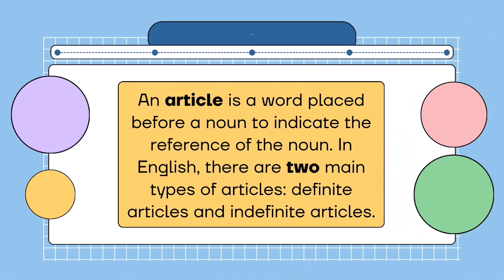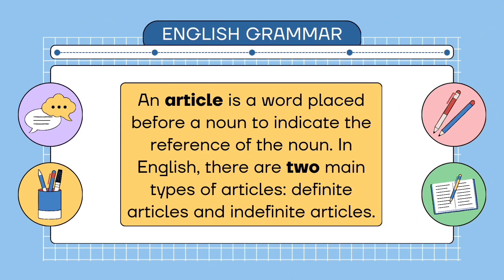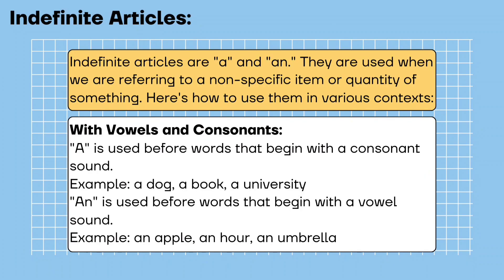Article. An article is a word placed before a noun to indicate the reference of the noun. In English, there are two main types of articles: definite articles and indefinite articles. Here's how to use them in various contexts.